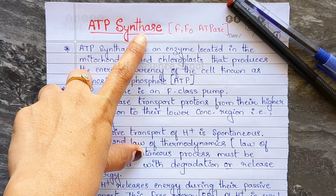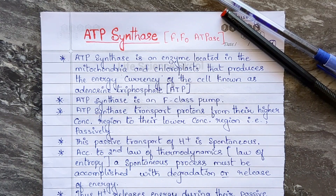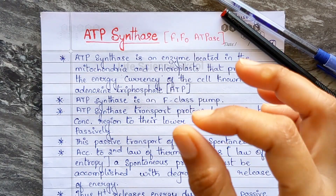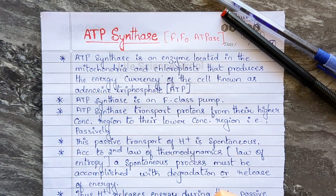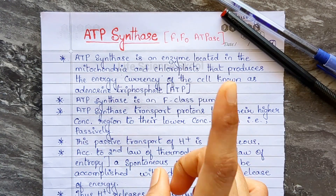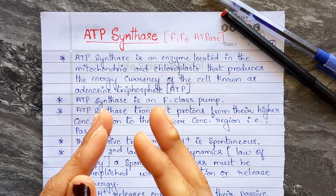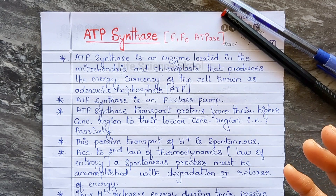Another name for ATP synthase is F1F0 ATPase. ATP is used by all living organisms including you. Your body is producing ATP right now — you have more than 15 trillion cells in your body, and in each cell the ATP synthase is making about a million ATP per minute. That gives a lot of energy.